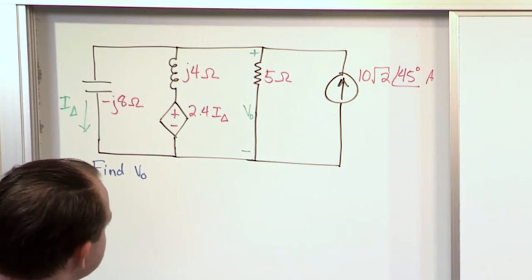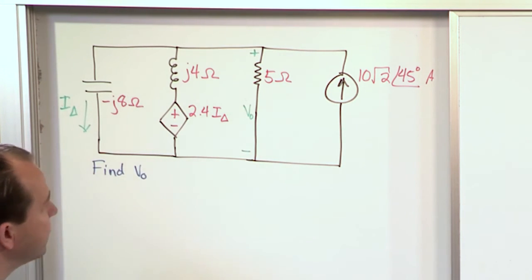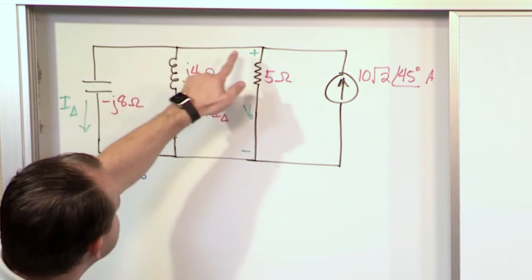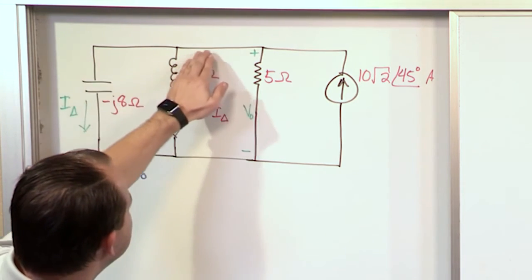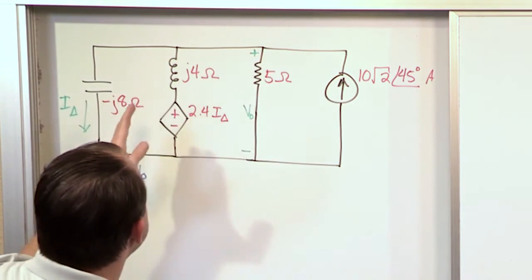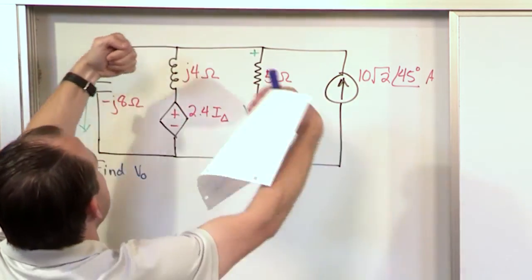And if you're just starting this stuff or if you haven't done node voltage in a while, you might say, well, here's a node and here's a node, so I'm going to have two nodes to deal with to write my node equations. But then you realize there's really nothing here in between any of these nodes.